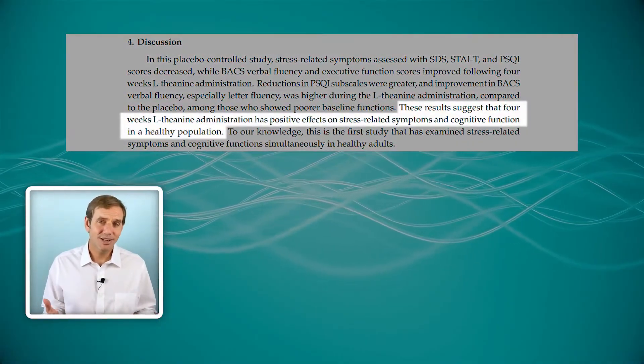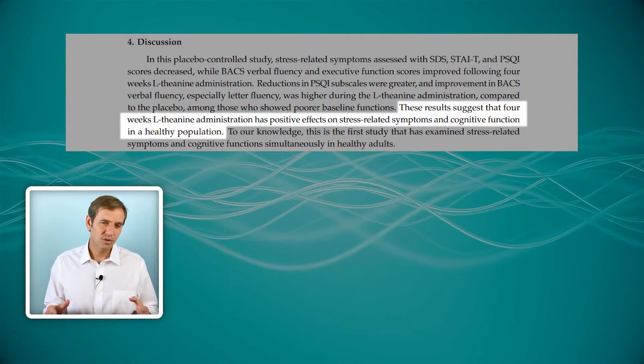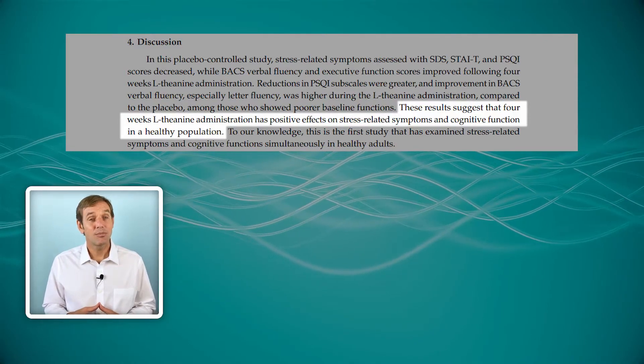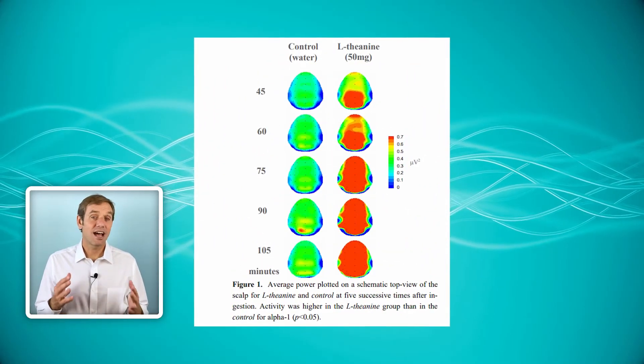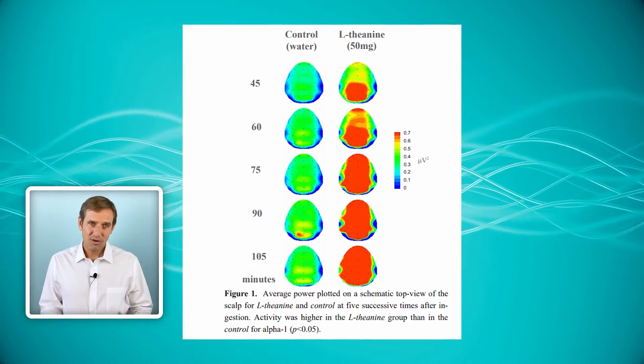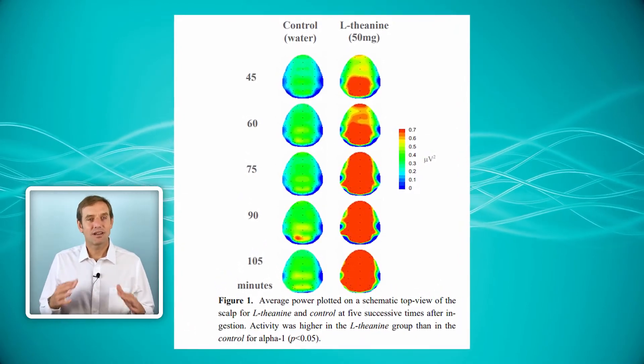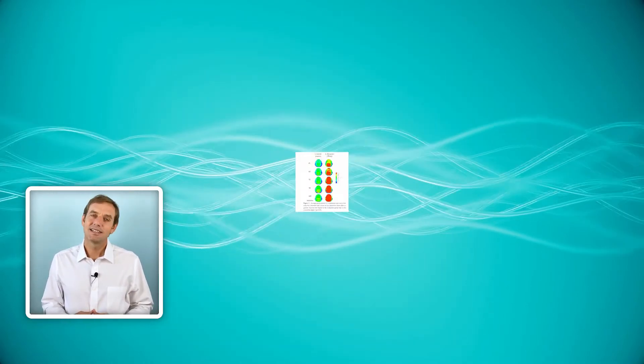Another way that L-theanine reduces stress is through enhancing alpha brainwave activity. Alpha brainwave activity is associated with feeling calm and relaxed. Additionally, L-theanine has been shown to balance levels of the stress hormone cortisol.